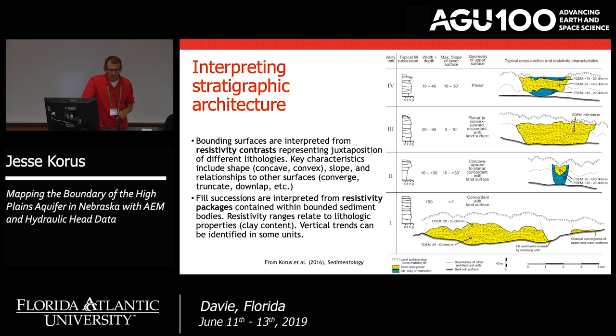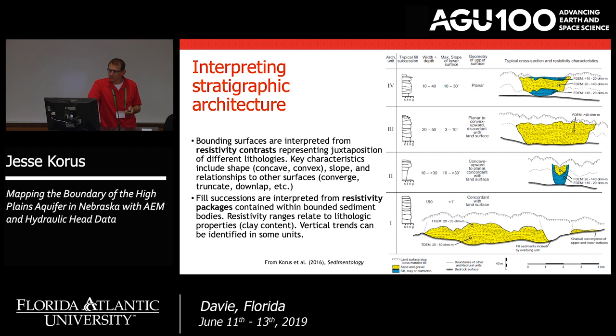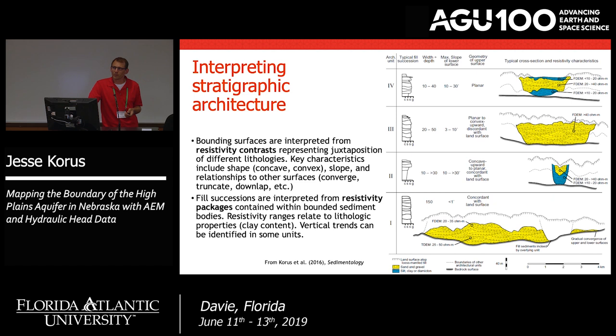The approach I've been taking comes from my background in sedimentary geology — I look at these AEM profiles and I see sedimentary bodies. We look for bounding surfaces, which requires a resistivity contrast. If we have a resistivity contrast that we can correlate from profile to profile, we can begin to quantify characteristics like the shape and slope of the lower and upper surfaces. We can also look at fill successions, defined with both borehole logs and the resistivity package within those bounded surfaces. A diagram from our 2016 paper shows a variety of buried valleys identified in eastern Nebraska and their different characteristics that allowed us to trace them throughout a survey block.